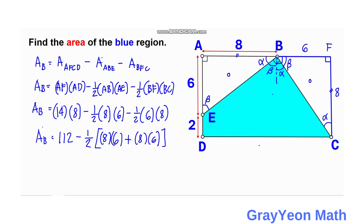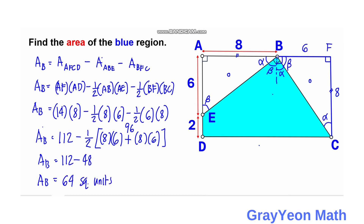Calculating: 14 × 8 = 112. The two triangle areas each equal one-half × 8 × 6 = 24, totaling 48. Therefore, Area of blue = 112 minus 48 = 64 square units. This concludes our first method.